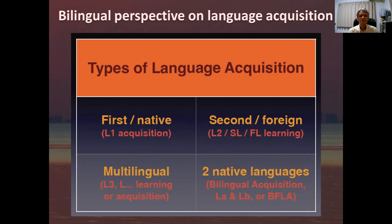And then moving down to the bottom left is multilingual language acquisition — it just means more than two languages. There's a difference between learning and acquisition. According to Stephen Krashen, acquisition can be just a natural process, like from babies — the way babies can easily learn languages. But learning then takes effort, so learning is actually different. You don't teach a baby a language; you just put them in the environment of that language and they absorb the language naturally. So that is acquisition, the way I'm using it here.